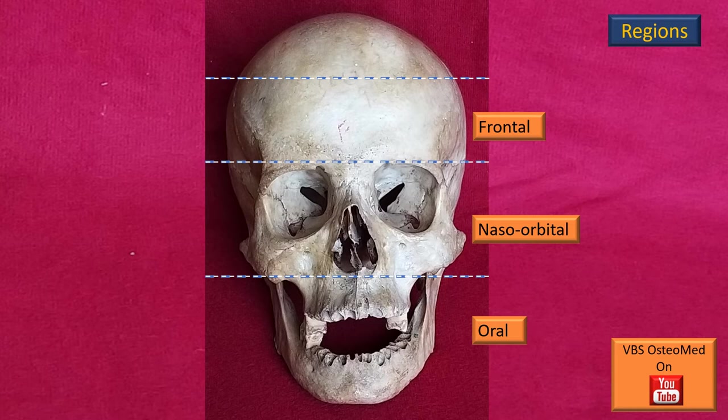In the earlier discussions, in previous videos, we have introduced the Norma frontalis of the skull in three regions: frontal, naso-orbital, and oral. In this particular video, we will cover the oral region.